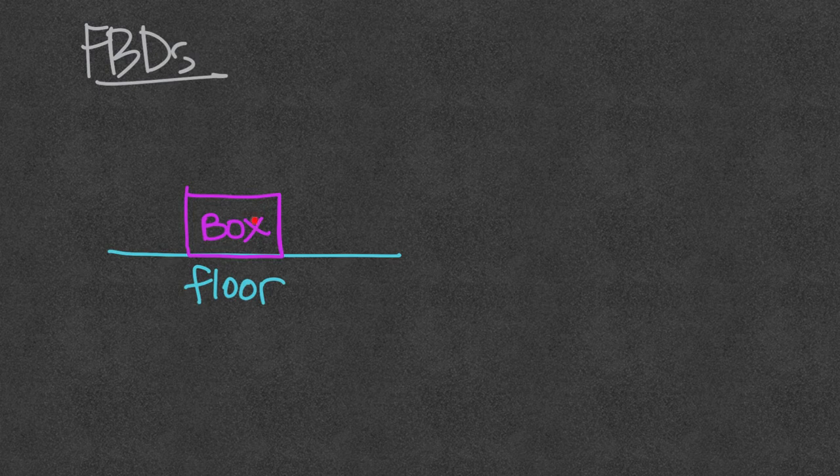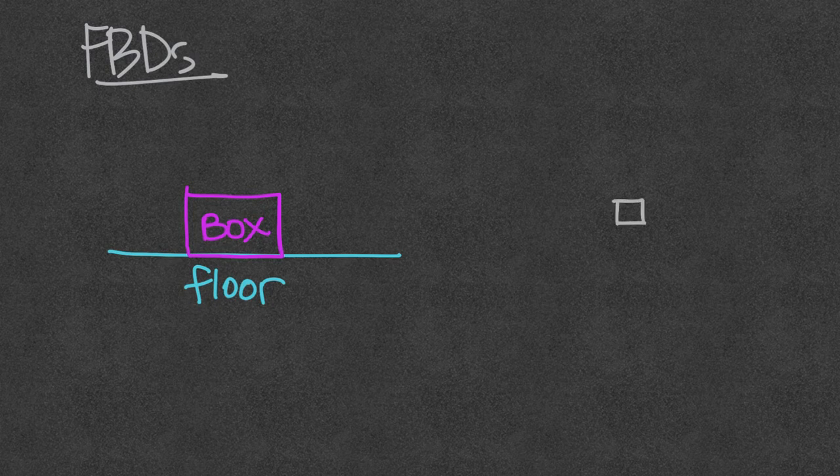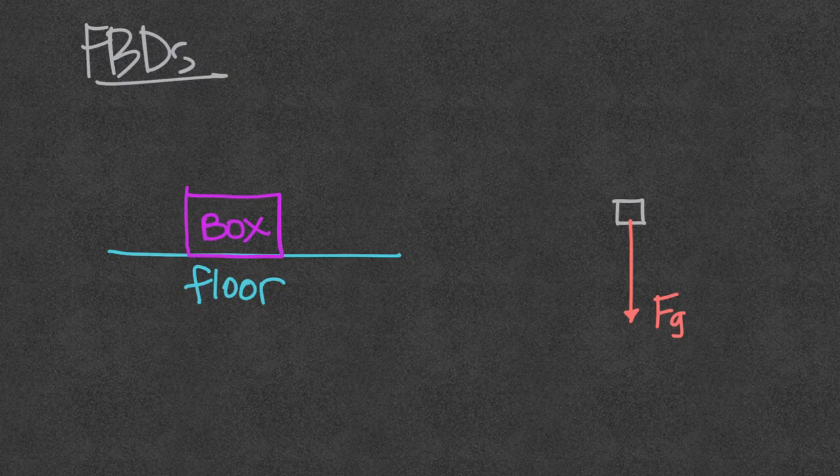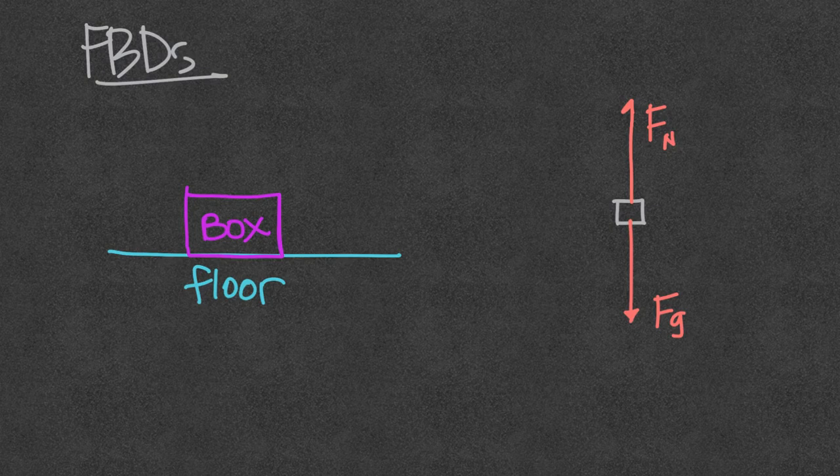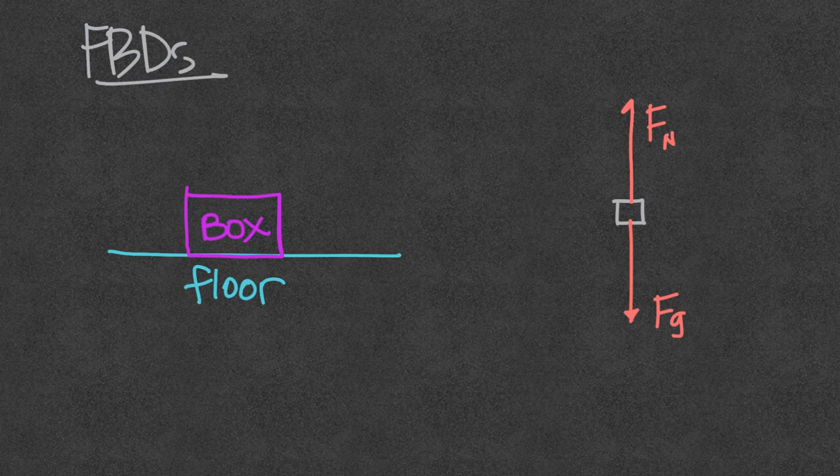So in this case we have a box sitting on the floor. I'll draw a box to represent the box. The box is on the earth so there's a gravitational force on the box and the box is sitting on a surface so there's a normal force up. There's nothing pushing the box left or right. So for this case my free body diagram is complete.